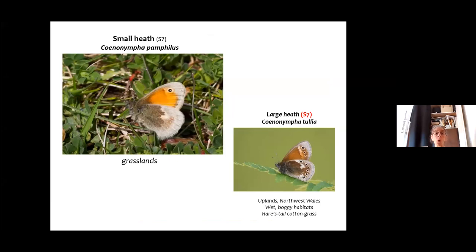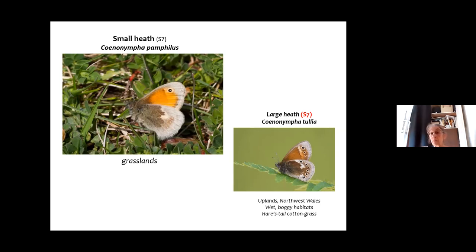The small heath is very bright orange — it's a small butterfly but can look quite big when flying, and then it lands and you think, oh, it's just a little butterfly. Another grassland species. The S7 designation just means it's a Section 7 species in Wales, emphasising it may be declining, though we don't know enough about them. The large heath is only in the uplands of Northwest Wales.